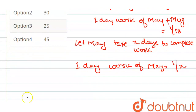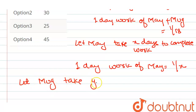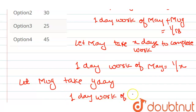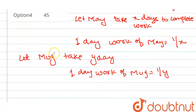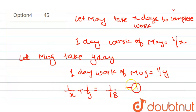अब हम let करते हैं — let Mugda take Y days, okay? Mugda को Y days लगते हैं, that means 1 day work of Mugda ये value आएगी हमारी 1/Y के equal, okay? ये सब clear होगा आपको। अब दोनों को मिला के 18 दिन लग रहे हैं, that means 1/X + 1/Y equals to 1/18.